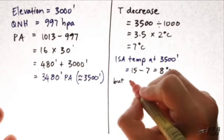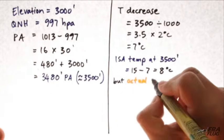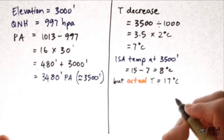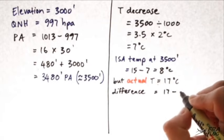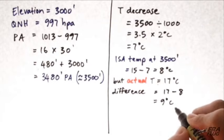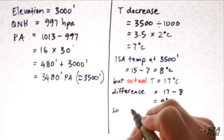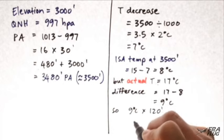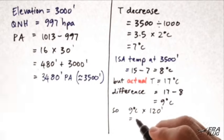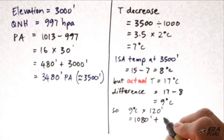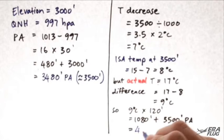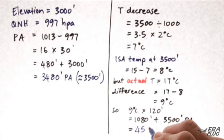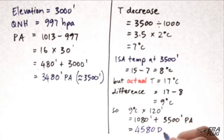However, the actual temperature is 17 degrees. The difference is 17 minus 8, giving us 9 degrees C. So, 9 degrees times 120 feet equals 1,080 feet, plus a pressure altitude of 3,500 feet. And we get a density altitude of 4,580 feet.